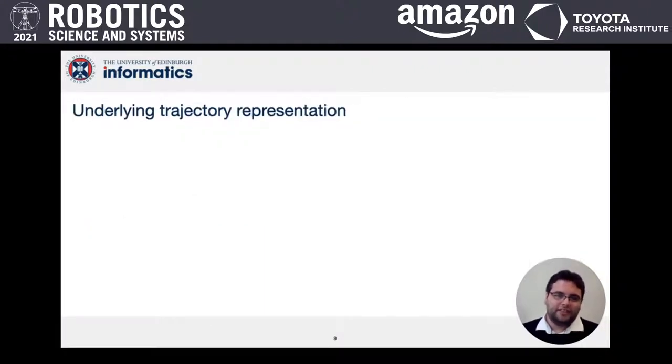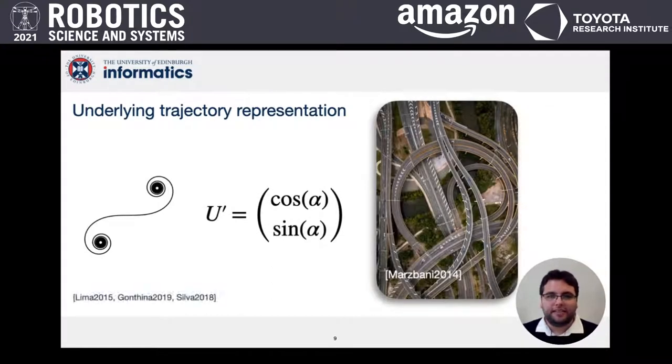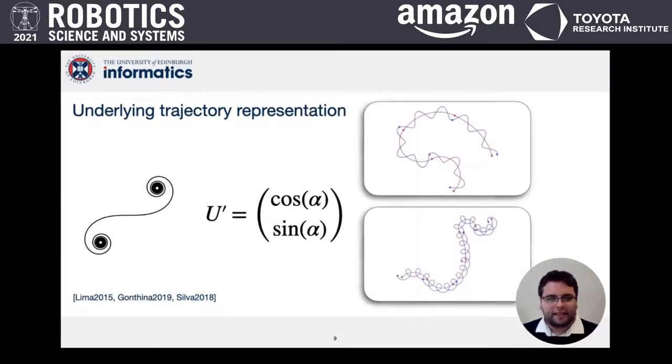For the underlying trajectory, we use a geometrical primitive called clothoids. These have been utilized in road design, autonomous driving and continuum robotics. In our case, clothoids give us a versatile and compact representation.